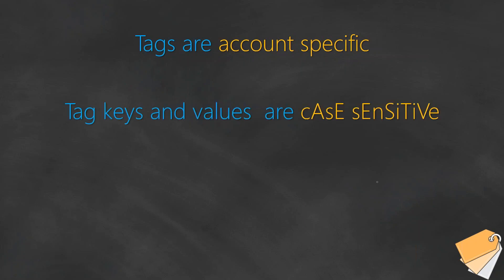The next thing is that tag keys and values are case sensitive. If you have a name and a value tag, both of them are case sensitive. So if your reporting tool is not able to understand these differences, or if your developers are not aware of this, they might end up creating duplicate tags, which can cause problems during cost aggregation or cost allocation to different teams. For example, 'Marketing' with an uppercase M versus a lowercase M will result in different cost allocations with no easy way to correlate them. When defining your tagging strategy, make sure it is consistent — either all uppercase, all lowercase, or PascalCase — so people know what cases to apply.